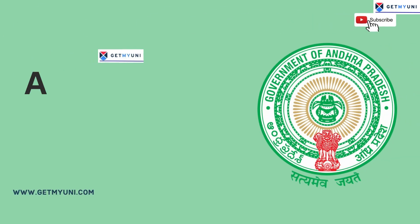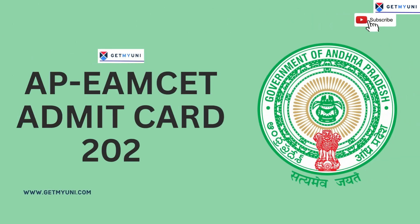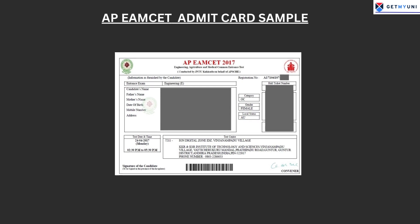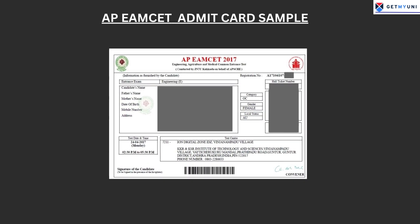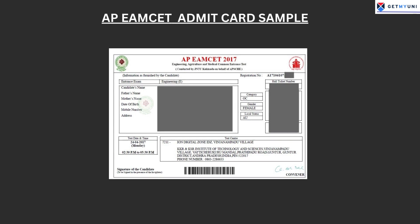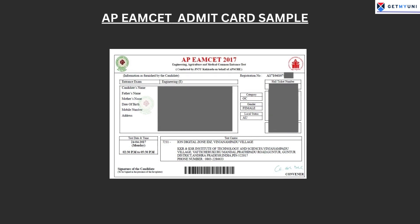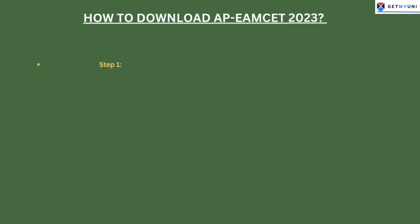AP EAMSET 2023 Admit Card will be released on 9th May 2023 today. Candidates can download admit cards from the official website using their login credentials. The steps to download AP EAMSET 2023 Admit Card are as follows.